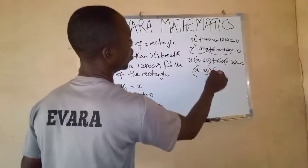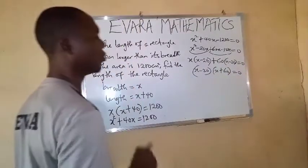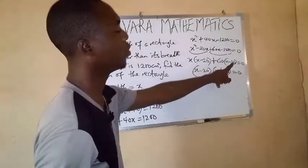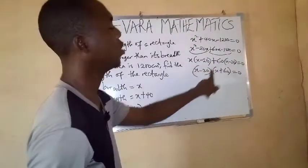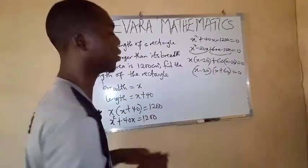So x minus 20, x plus 60 equals to 0. In case you've forgotten, we have the same third factor here. We will pick one. Then these other ones outside, we will put them in a bracket.